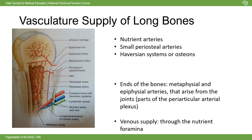The ends of bones are supplied by different arteries - usually part of the periarticular arterial plexus - than the middle of long bones. This is really important when grafting bones, as we take the middle not the ends, and also when considering fractures and what blood supply is at risk. Don't forget the venous supply too - just like the ribs, veins also pass through the nutrient foramen.